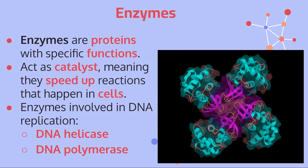Throughout this lesson we've been talking about enzymes. Enzymes are a special type of protein, and proteins carry out nearly everything within our body. As catalysts, enzymes speed up and control reactions in our cells. The two enzymes from Lesson 2 you need to know are DNA helicase and DNA polymerase: helicase's job is to unzip the DNA, and DNA polymerase's job is to add nucleotide base pairs to the new strand from the old strand.